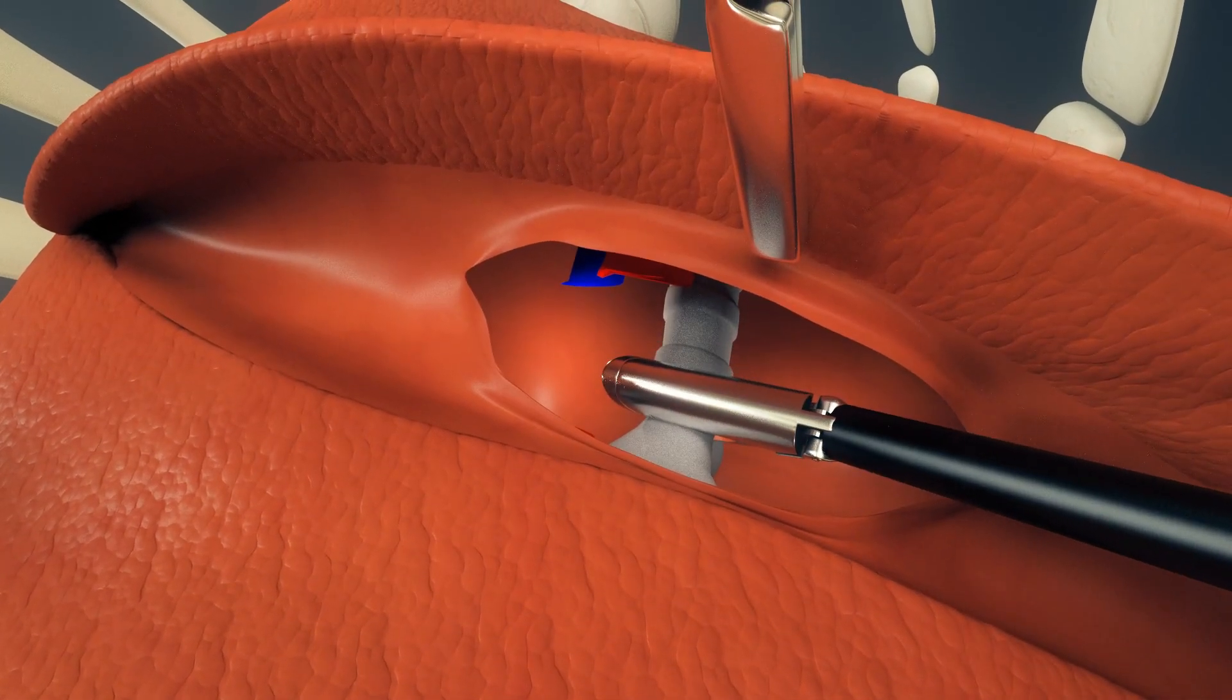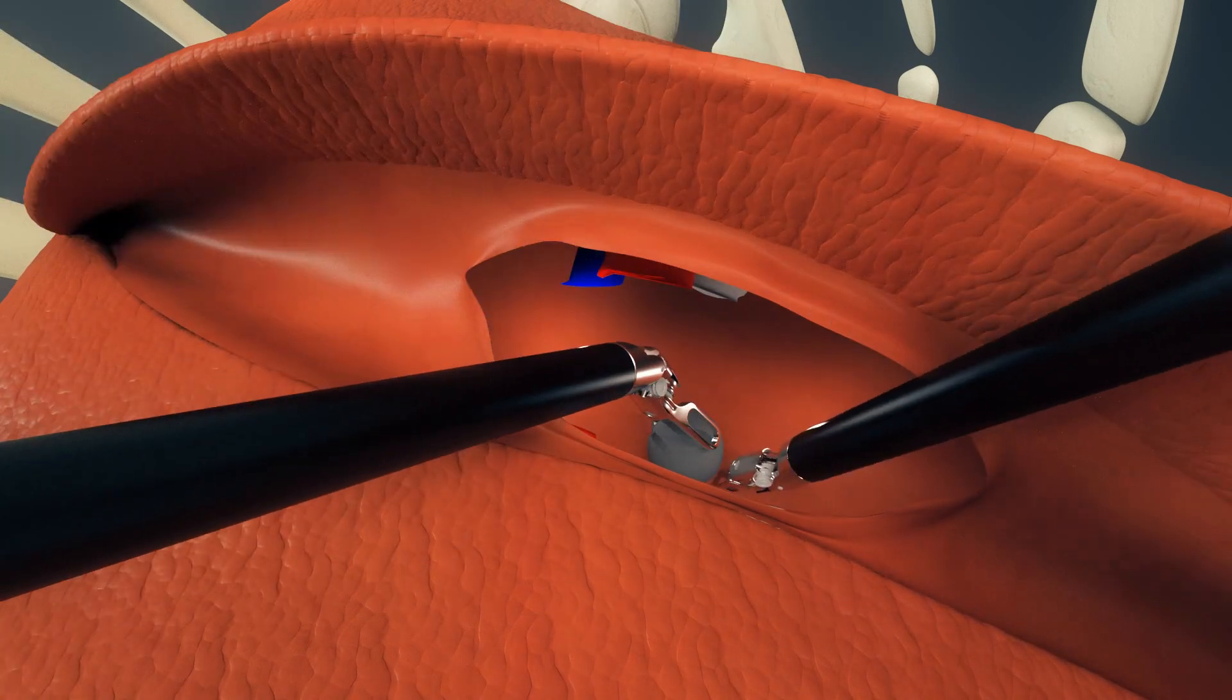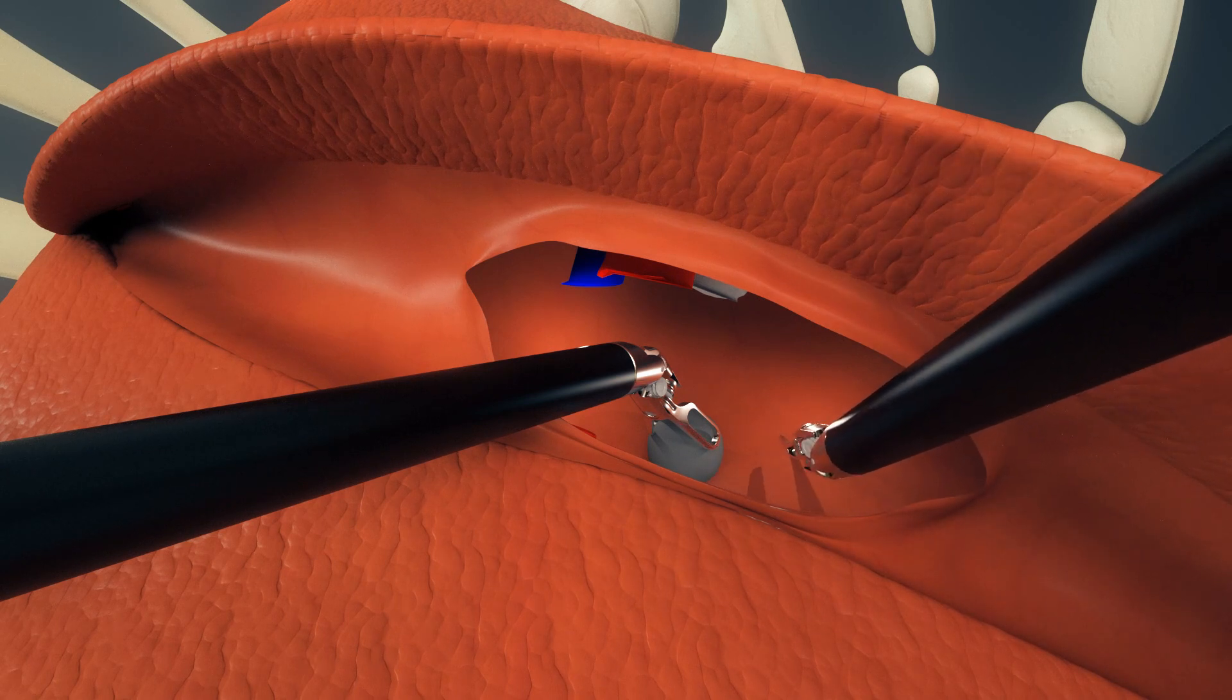The surgeon also removes lymph nodes that are adjacent to the pulmonary vessels and bronchus. These lymph nodes are analyzed and can determine whether the cancer cells have traveled from the tumor's original site.